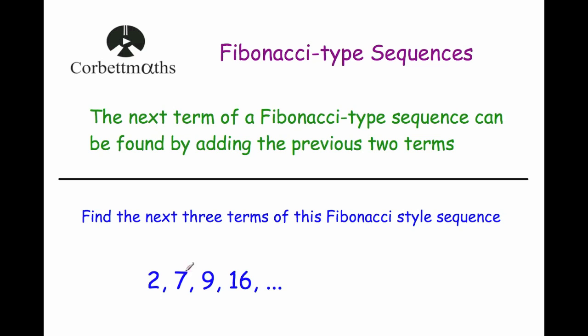So here we've got a Fibonacci style sequence. So two plus seven is nine. Seven plus nine is sixteen. We've been asked to generate the next three numbers. I found the next three terms. So nine plus sixteen, well nine plus sixteen is twenty-five. Sixteen plus twenty-five would be forty-one. And twenty-five plus forty-one would be equal to sixty-six. So they would be the next three terms in that Fibonacci style sequence. So you just add the two previous numbers.